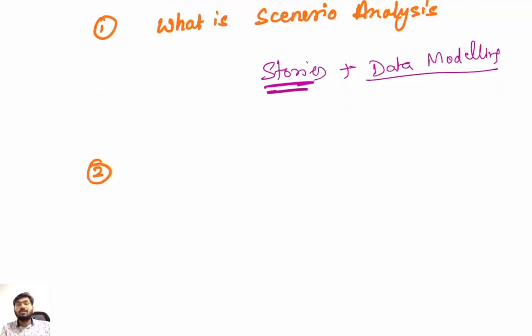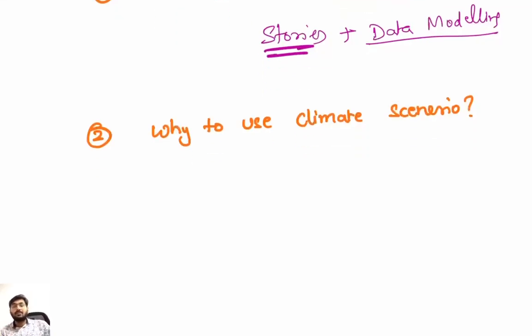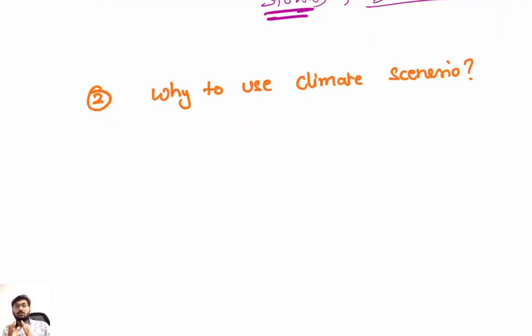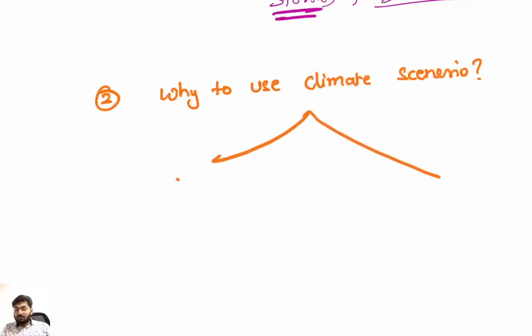Now the second point: Why to use climate scenarios? See, climate is something uncertain. We don't know exactly what will happen - how much the temperature will rise, what policy government will adopt, how fast companies will move to renewable energy. So instead of just guessing one future, we will prepare for many possible future options.